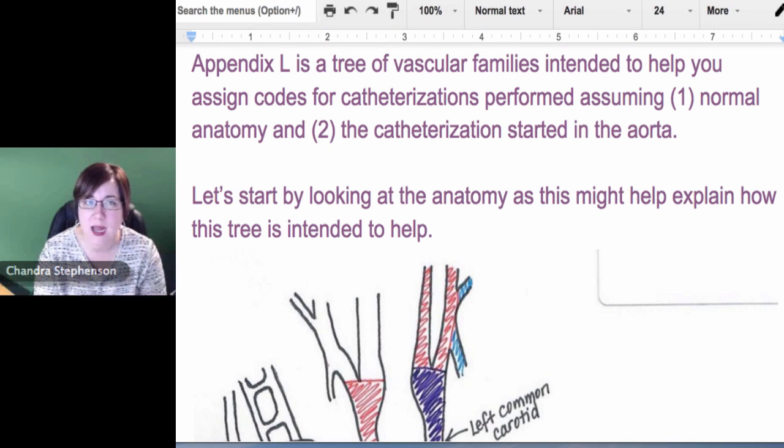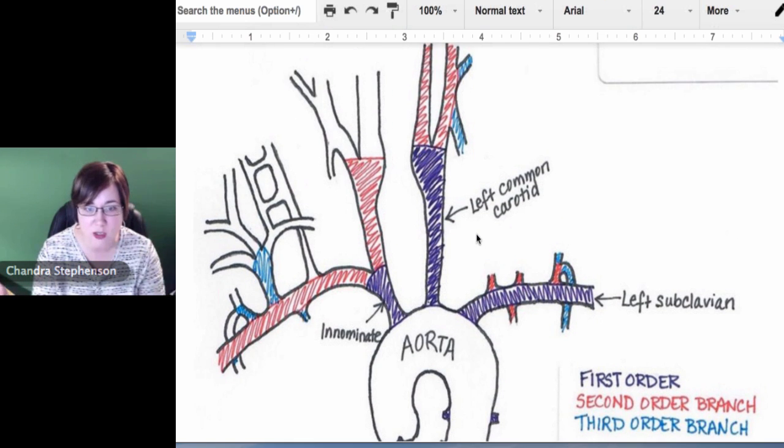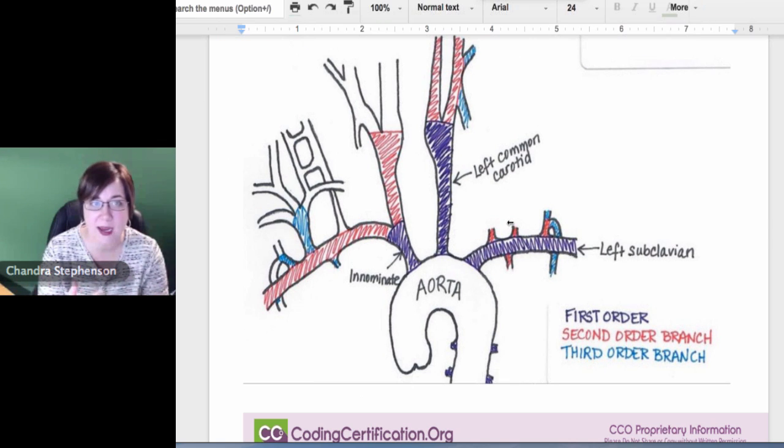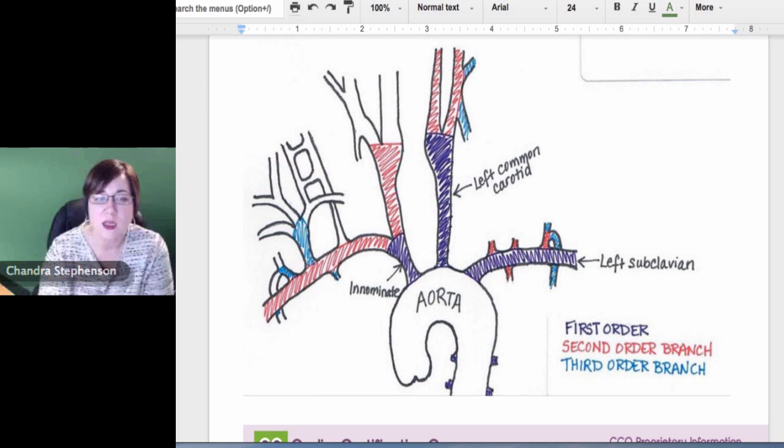For Appendix L, the patient has normal anatomy and we started in the aorta. So let's talk a little bit about the anatomy. If you could scroll up so you can see my little picture there. I went old school for this. I got out a pen and paper and drew a little picture and got my crayons out. What I want to explain is what they're talking about when they say first order, second order, third order. The little white arch at the bottom that I've got labeled the aorta - remember that the aorta runs the entire thoracic and abdominal cavity.